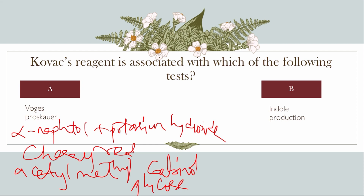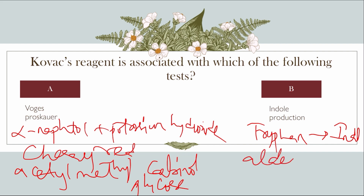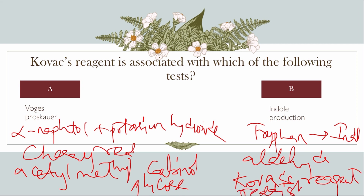The indole test demonstrates the ability of bacteria to decompose the amino acid tryptophan to indole. This test is important to identify enterobacteria like E. coli. Indole will react with the aldehyde present in Kovacs reagent to give a reddish-pink color — a positive sample will show reddish-pink color. So Option B, indole production, is the correct answer.